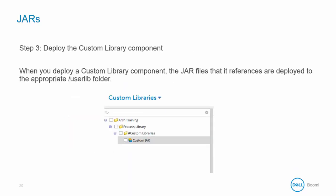Step 3 is to deploy the custom library component. When you deploy a custom library component, the JAR files that it references are deployed to the appropriate UserLib folder. In the Deploy tab, you need to change the drop-down list from Processes to Customer Libraries to view the custom libraries components.